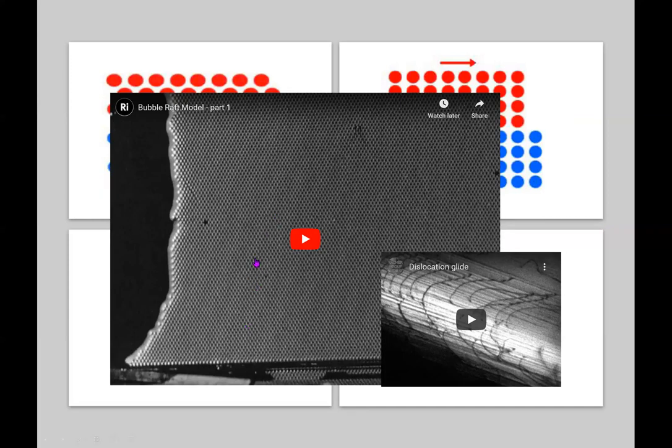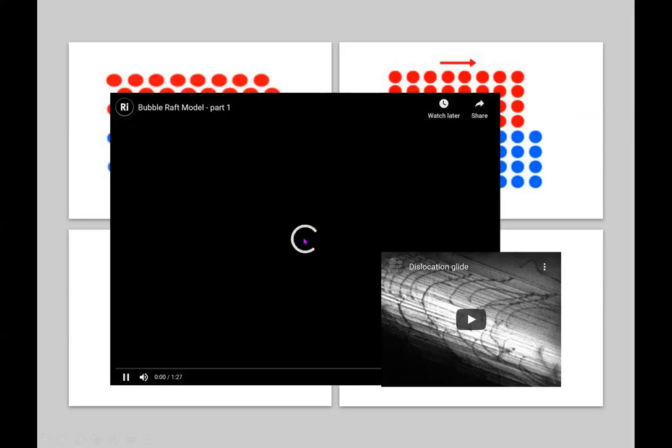So what we're looking to see is, do we see entire rows of atoms just suddenly moving across one another to a new position, or do we see something that looks more like a dislocation where we get a distortion locally somewhere, and then that distortion moves along as it moves part of the crystal until it's complete. So again, these are just bubbles, but it's a very nice experiment.